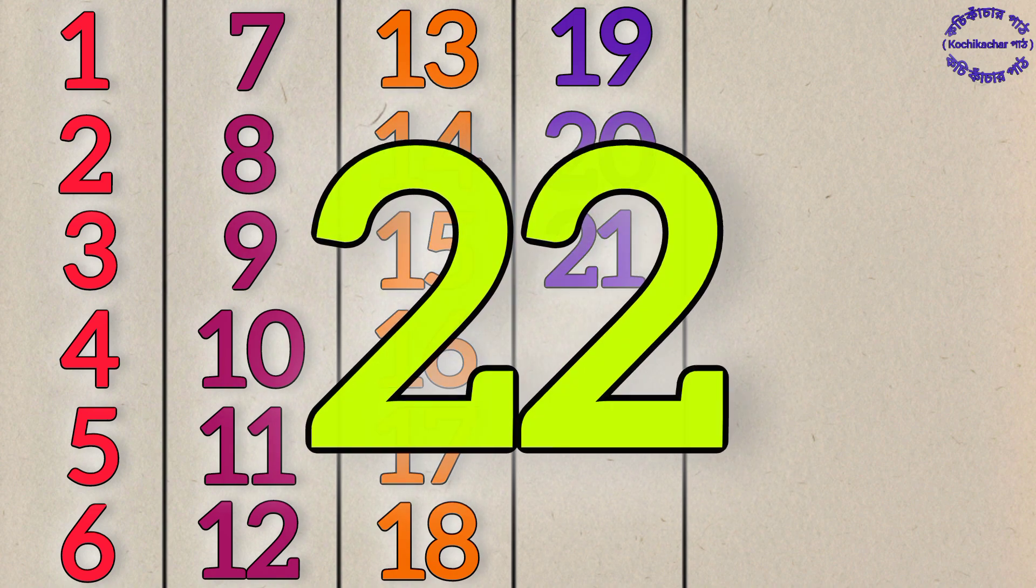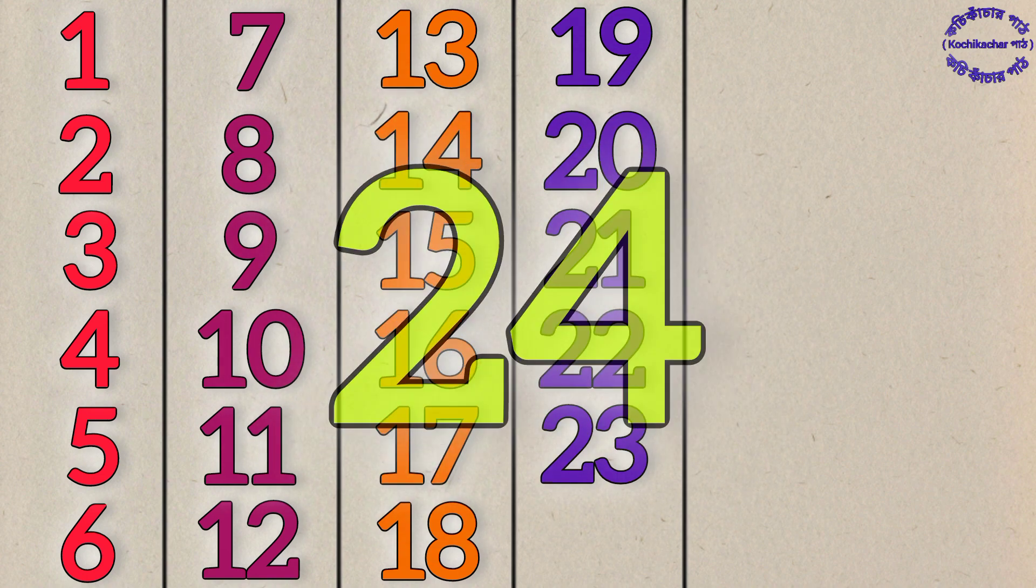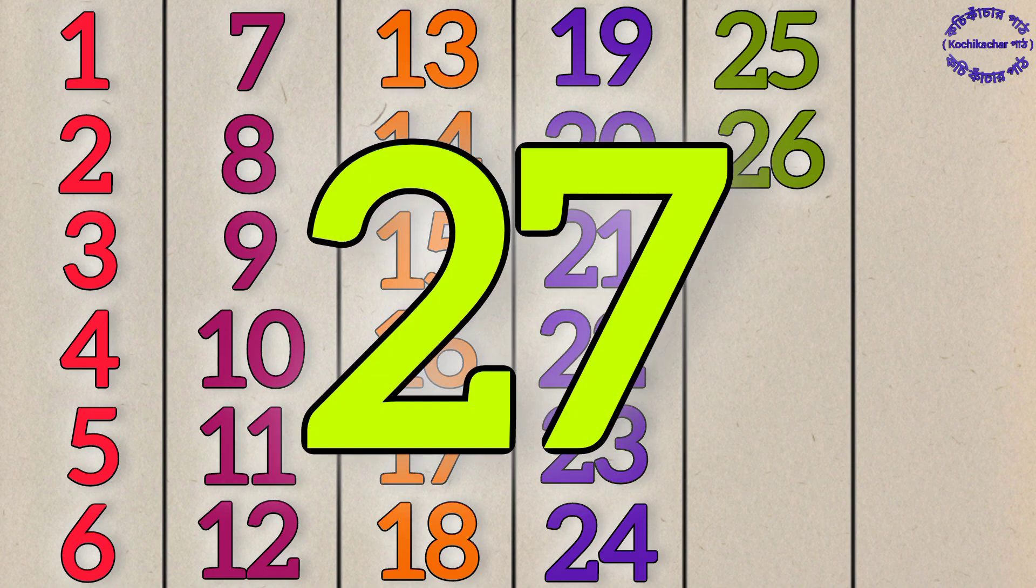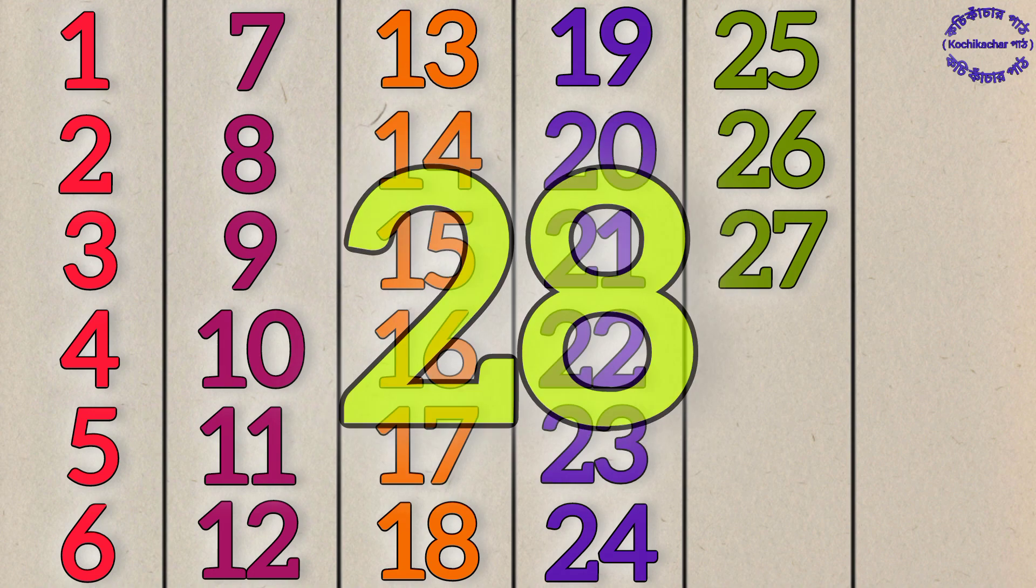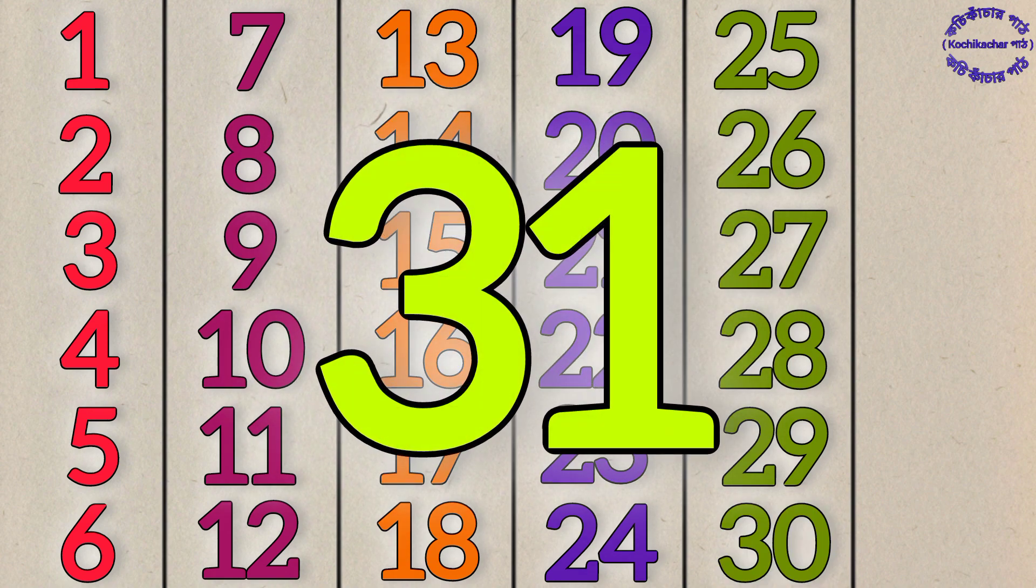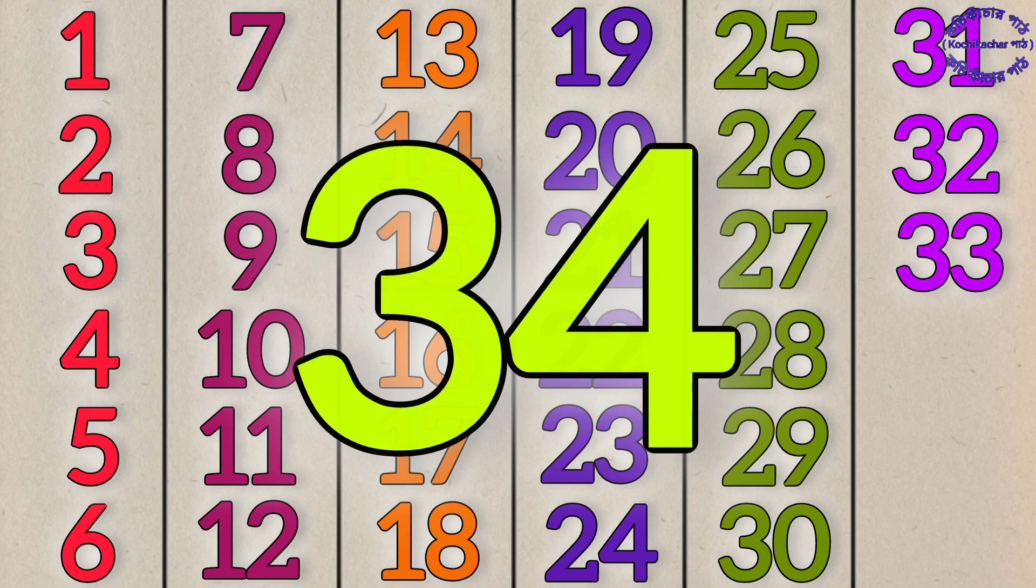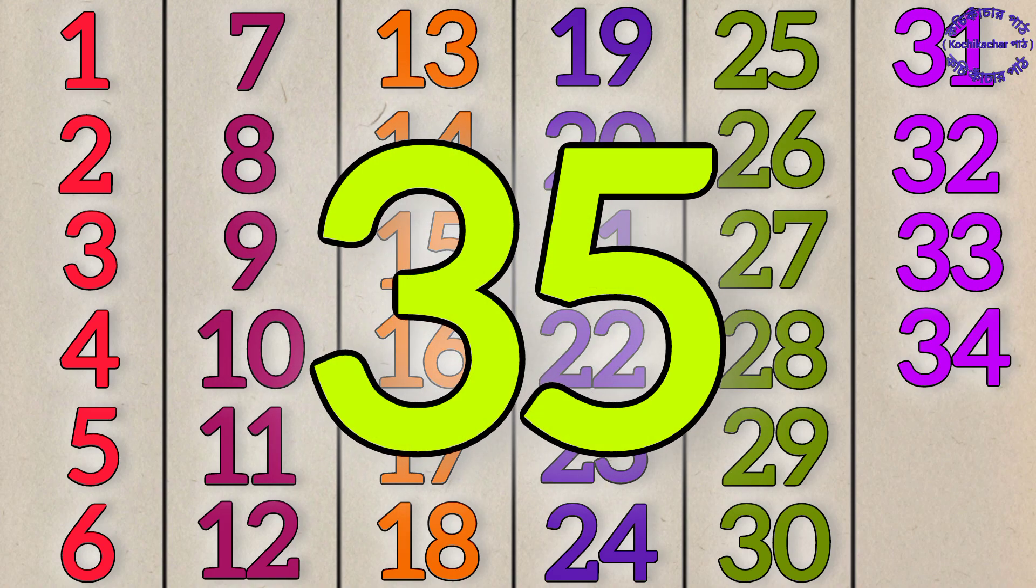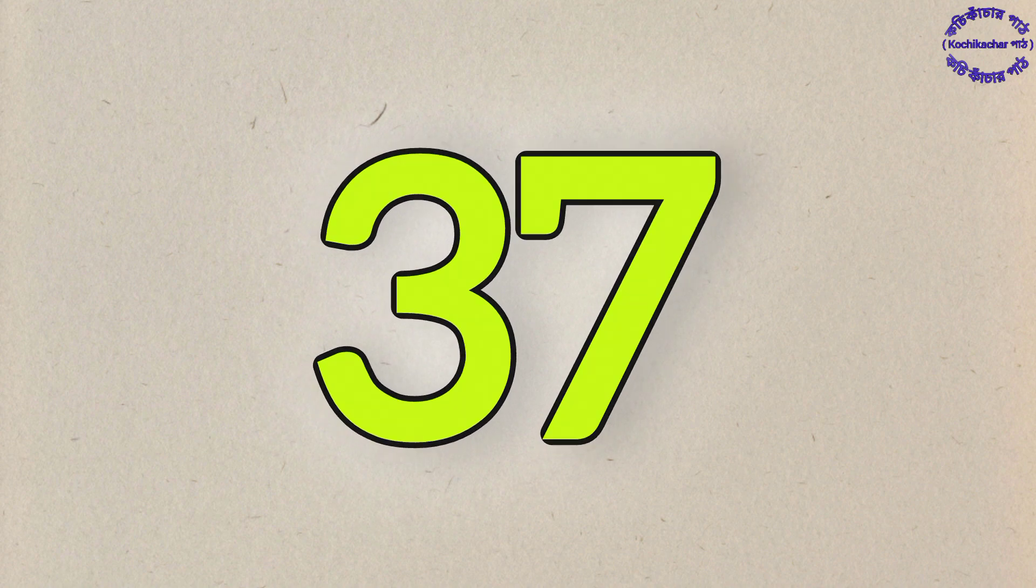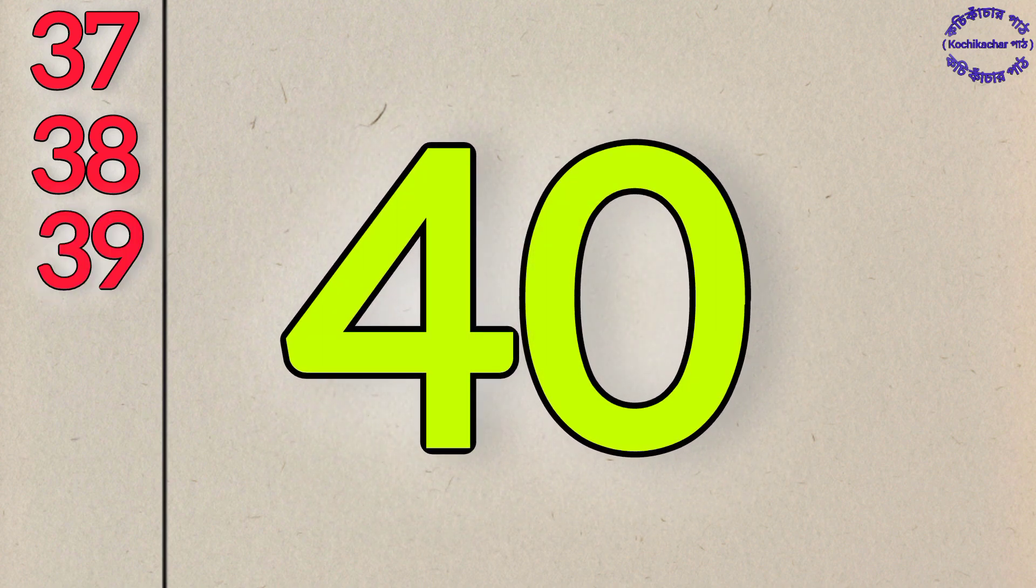2, 1, 21. 2, 2, 22. 2, 3, 23. 2, 4, 24. 2, 5, 25. 2, 6, 26. 2, 7, 27. 2, 8, 28. 2, 9, 29. 3, 0, 30. 3, 1, 31. 3, 2, 32. 3, 3, 33. 3, 4, 34. 3, 5, 35. 3, 6, 36. 3, 7, 37. 3, 8, 38. 3, 9, 39. 4, 0, 40.